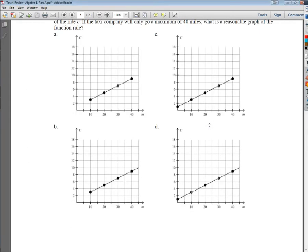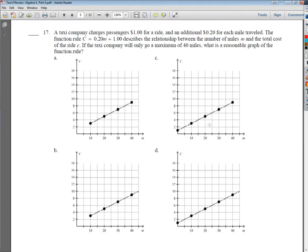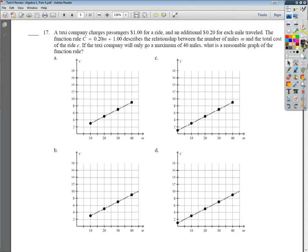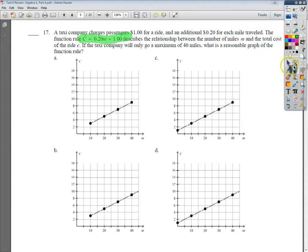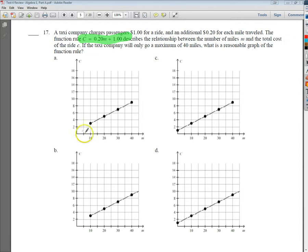Number 17. Number 17 says a taxi company charges passengers a dollar for a ride, an additional 20 cents for each mile traveled. Now the cool thing mathematically is that they give you the rule and they want you to describe which one of these matches what it's supposed to be. What I'm going to do is I know that the M values, or the plug-in values on my input, would be the miles. And they want to say, okay, what if it only goes to 40 miles? I'm actually going to plug in 10, 20, 30, and 40 to see what those values are and see if I can make a graph out of it.